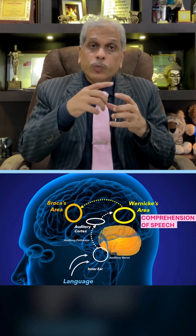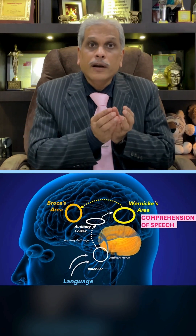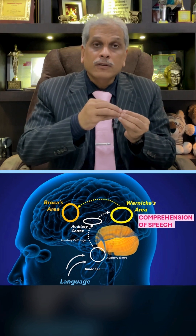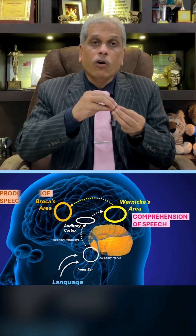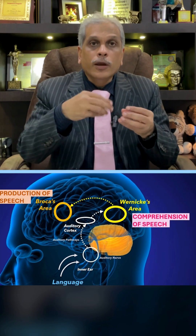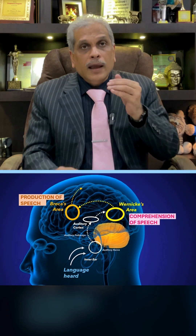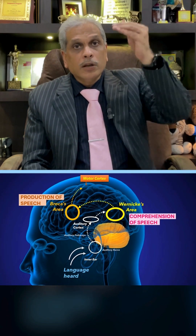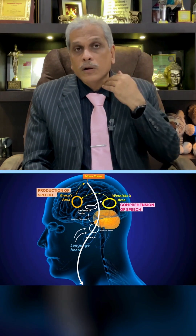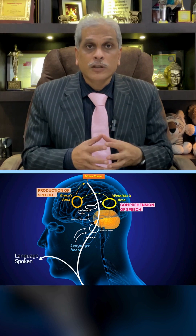From the Wernicke's area, it goes to the Broca's area, where the response is being converted into speech — meaning what muscles and what things have to move is determined. Then from there, it passes on through the cerebral cortex to the vocal cords for production of the speech.